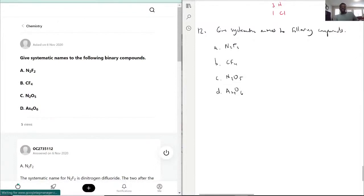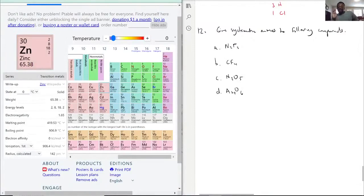So the way we name these, first you have to recognize something. As we go through them, you notice that all of these are molecular compounds because nitrogen and fluorine, they're both nonmetals. Carbon and fluorine, same thing, both nonmetals, molecular. Nitrogen and oxygen, both nonmetals, molecular.